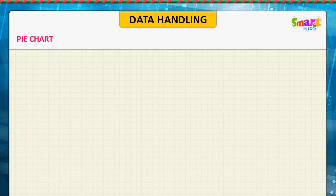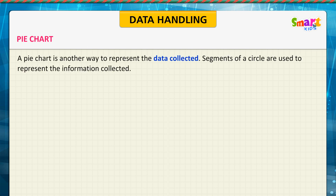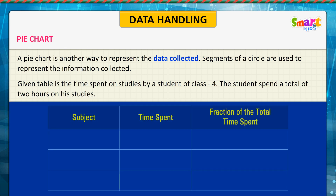A pie chart is another way to represent data collected. Segments of a circle are used to represent the information collected. The given table shows the time spent on studies by a student of Class 4.